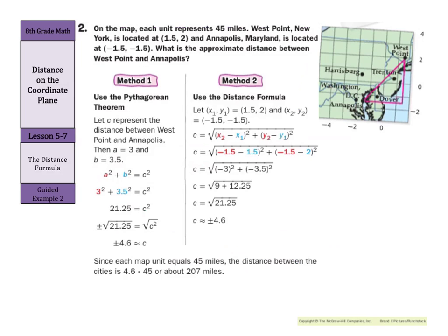Now, it says on the map each unit represents 45 miles. West Point, New York is located at (1½, 1½) right there and Annapolis, Maryland is located at (-1½, -1½) which is right around here. What is the approximate distance between West Point and Annapolis? Well, you could use the Pythagorean theorem like we did in example 1 and say, okay, a is 3, b is about 3½, that's 21.25 and take the square root and get 4.6.